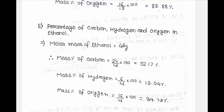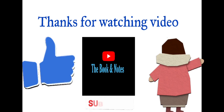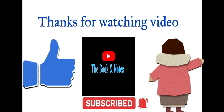Percentage of carbon, hydrogen, and oxygen in ethanol: molar mass of ethanol = 46g. Mass percentage of carbon = (24 ÷ 46) × 100 = 52.17%. Mass percentage of hydrogen = (6 ÷ 46) × 100 = 13.04%. Mass percentage of oxygen = (16 ÷ 46) × 100 = 34.78%. Thanks for watching the video and do not forget to like, share, and subscribe to our channel.